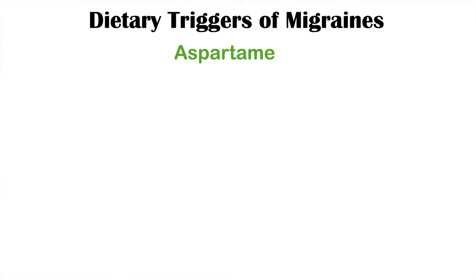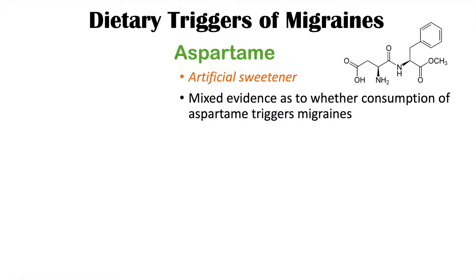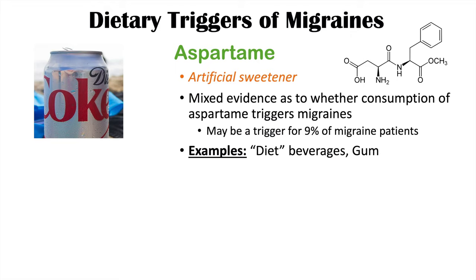Aspartame, an artificial sweetener, is another dietary trigger, though the evidence is mixed. Some evidence suggests it does trigger migraines, potentially in approximately 9% of migraine patients. Aspartame can be found in diet beverages like Diet Coke and Diet Pepsi, as well as certain types of chewing gum.